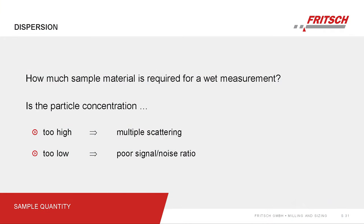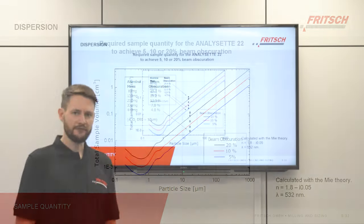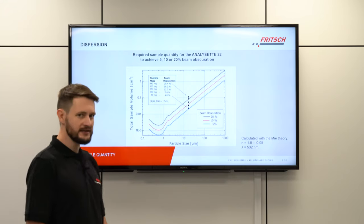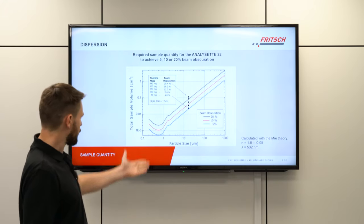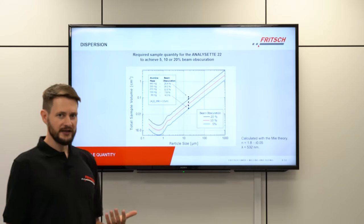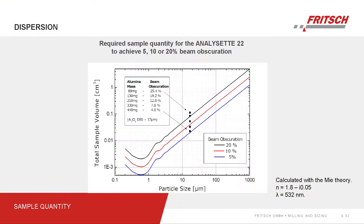The parameter we use to determine sample concentration in the wet dispersion is the so-called beam obscuration — the percentage of laser light that is diffracted away from its original path, which has a direct relation to sample volume in the dispersion. On this graph, total sample volume needed is shown as a function of particle size for three different beam obscuration values. Typically we look for a value somewhere in the range of 10 to 20 percent. Clearly, the amount of sample needed is much higher as particles become bigger.